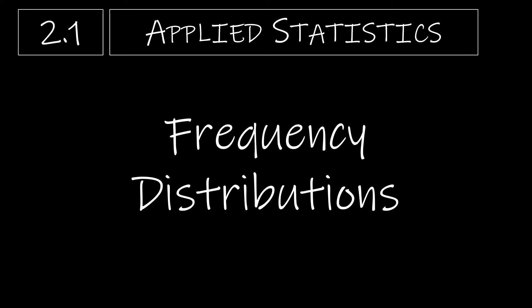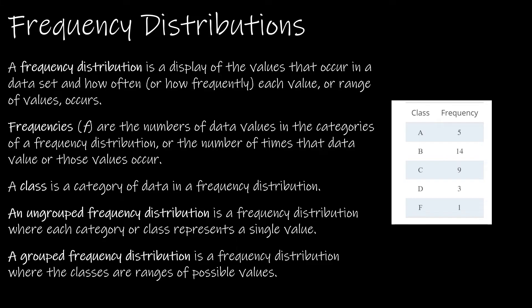This is lesson 2.1, frequency distributions. A frequency distribution is simply a frequency table. There are typically two columns, sometimes more. The first column should include the class, which might be ungrouped — such as A, B, C, D, F representing final grades in a statistics class — or it could be a grouped frequency distribution, where for instance 91 to 100 is an A and 81 to 90 is a B. The second column is the frequency, which is a count of how many times that data value or range of values occurs. You might also see a relative frequency column.